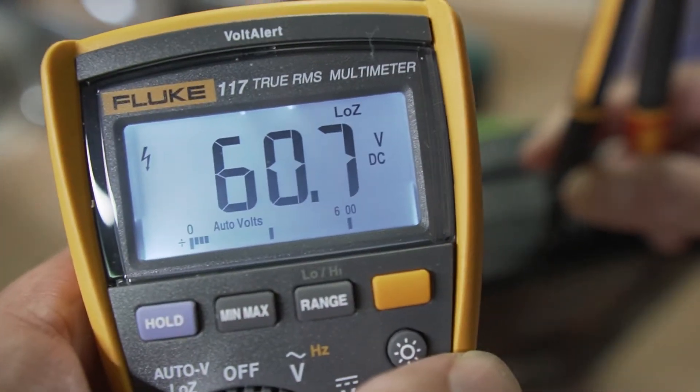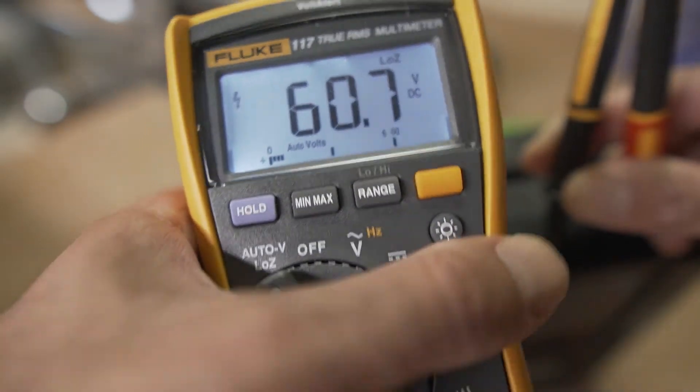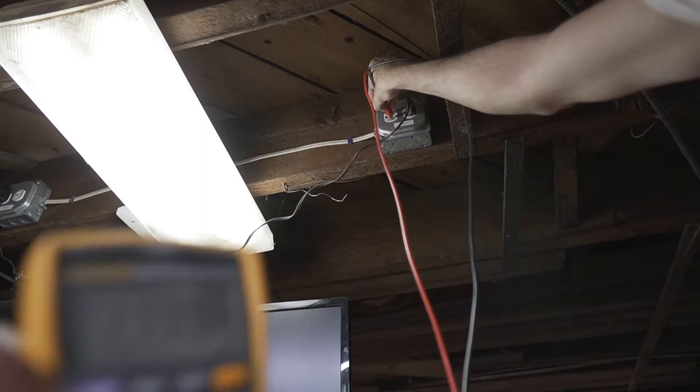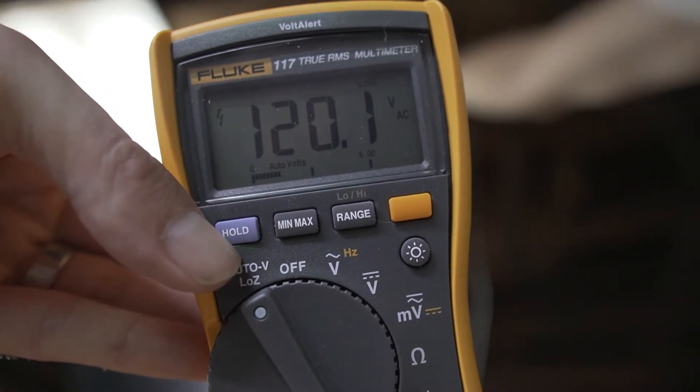So if I try to test this battery here, it automatically knows it's DC voltage when it's in the auto mode. Or I can plug into an outlet and it'll automatically detect that it's AC voltage.